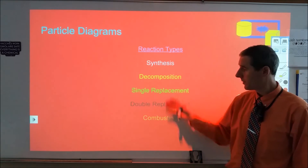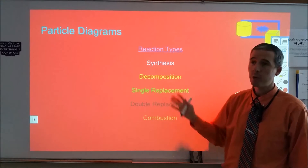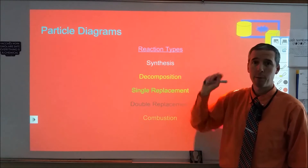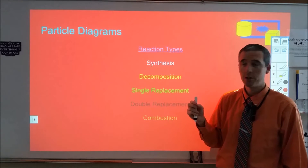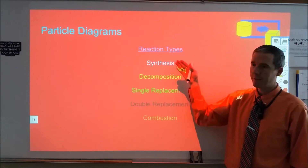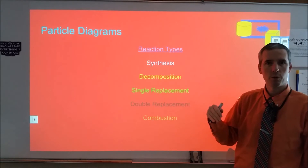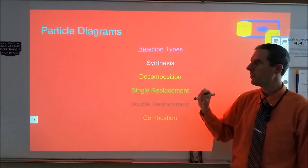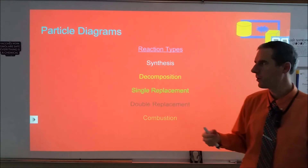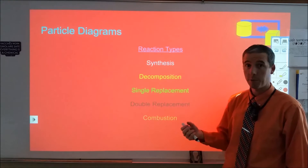Five common reaction types are listed here. I'd like to go through each one individually with an example, looking at particle diagram representations to get a better understanding of each, and to emphasize the difference between charged and neutral species, and how to use that to determine subscripts, coefficients, and other features that people struggle with in writing chemical reactions.